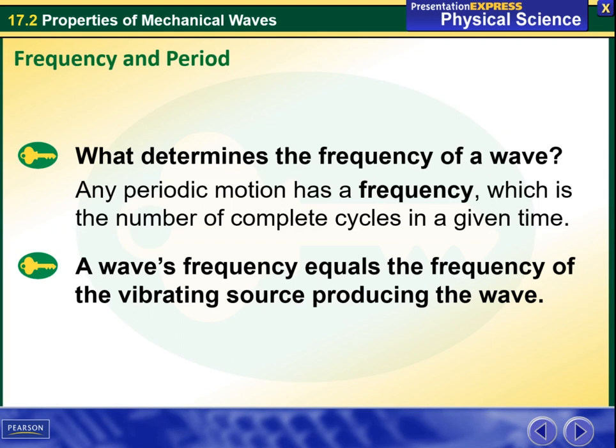Firstly we're going to start talking about frequency and period. What determines the frequency of a wave? Any periodic motion has a frequency, which is the number of complete cycles in a given time. A wave's frequency equals the frequency of the vibrating source producing the wave.